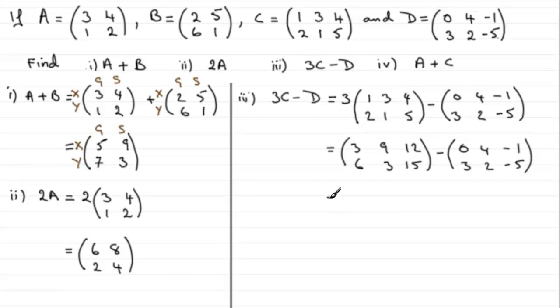Now if we subtract each of the elements from one another, we end up with 3 - 0 is 3, 9 - 4 is 5, 12 - (-1) is 13, and then 6 - 3 is 3, 3 - 2 is 1, and 15 - (-5) is 20. Okay, so 3C - D.